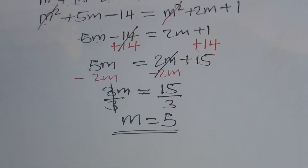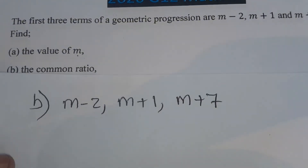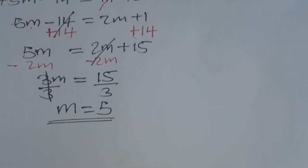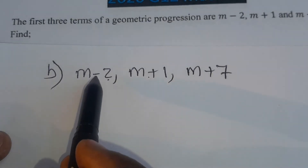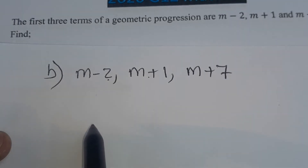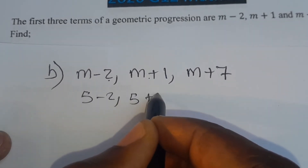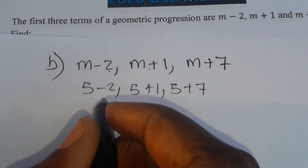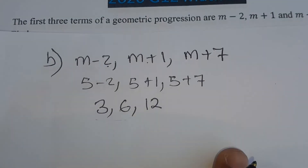If you are with me up to this point, please subscribe, hit the like button, comment and share. Part B says find the common ratio. The terms of the geometric progression are m minus 2, m plus 1, and m plus 7, and we found m is 5. Substituting 5: 5 minus 2 is 3, 5 plus 1 is 6, and 5 plus 7 is 12. So the actual progression is 3, 6, 12.